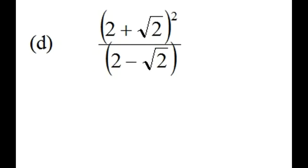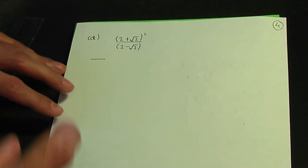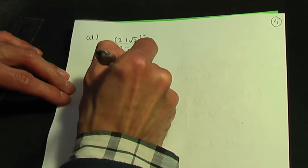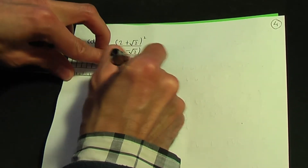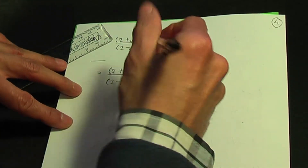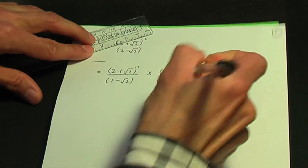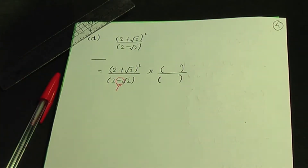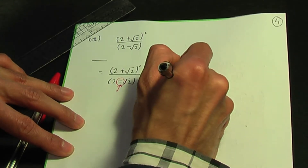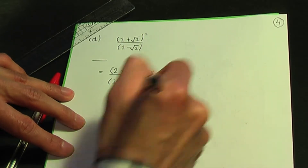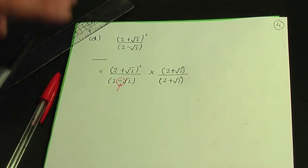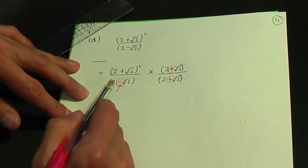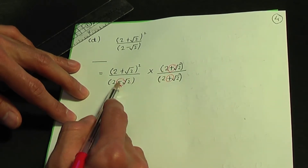Here's part D: we need to rationalise two plus root two squared over two minus root two. Back to the paper and pen. Remember the idea: multiply the numerator and denominator by a similar term to the denominator, but reverse the sign in the middle — so minus becomes plus. We need to multiply top and bottom by two plus root two. You multiply top and bottom by a similar term but reverse that centre sign.